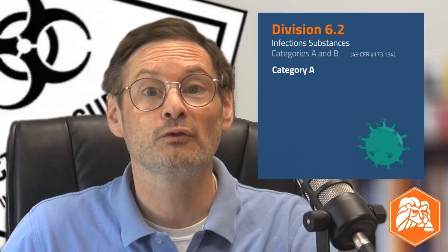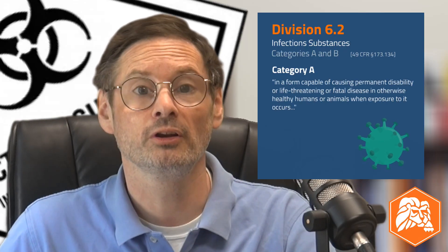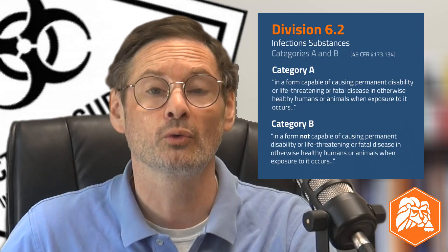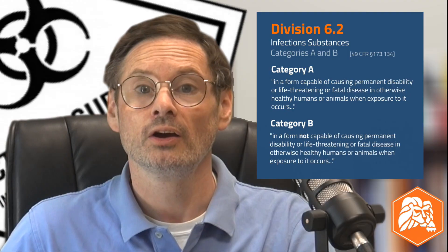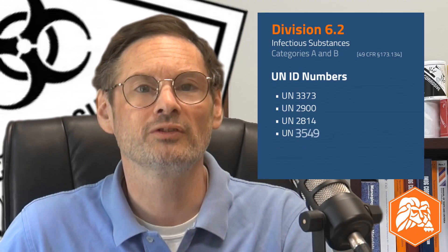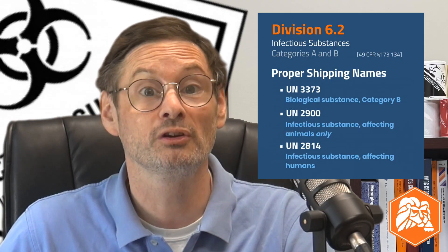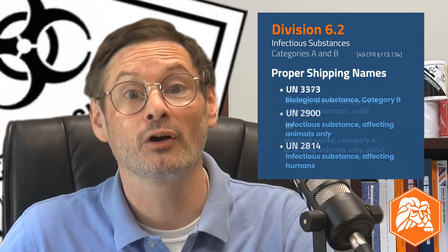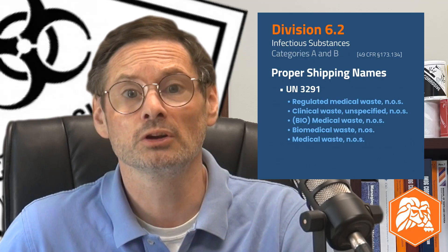Division 6.2 infectious substances are placed in Category A or Category B. The Category A infectious substance is a material in a form that can cause permanent disability or life-threatening or fatal disease in humans or animals. Category B materials — hold on to your hats — are in a form that cannot cause those things. If you look through the hazmat table in Part 172.101, there are five UN numbers and ten shipping names to choose from, so two categories is really plenty.